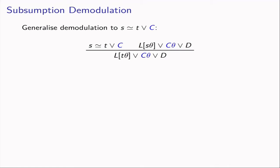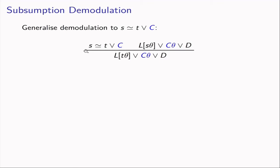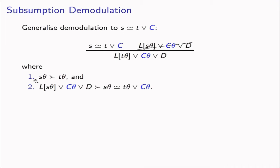Now we want to generalize demodulation to non-unit equalities. Compared to demodulation, in the left premise we add some literals C, and in the right premise we add the instance of those literals C·theta. The effect of the rule is again rewriting s·theta to t·theta. We need side conditions: first, s·theta must be larger than t·theta; second, the right premise must be larger than the instance of the left premise. We call this rule subsumption demodulation because we can use techniques from subsumption checking to implement it. Using these two side conditions, we can prove that subsumption demodulation is sound and is a simplification rule.